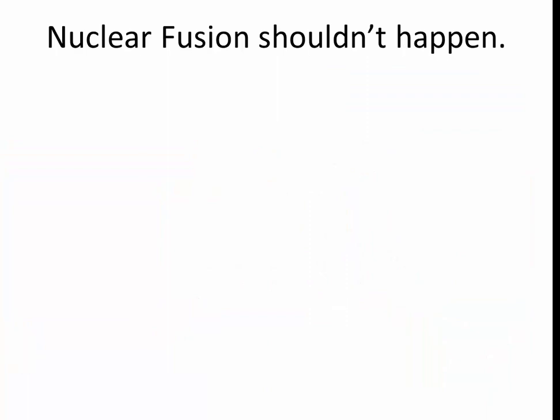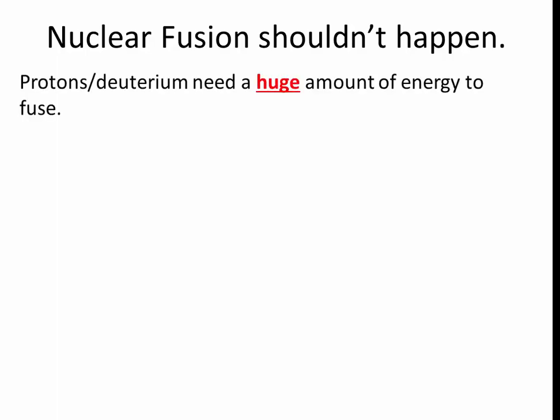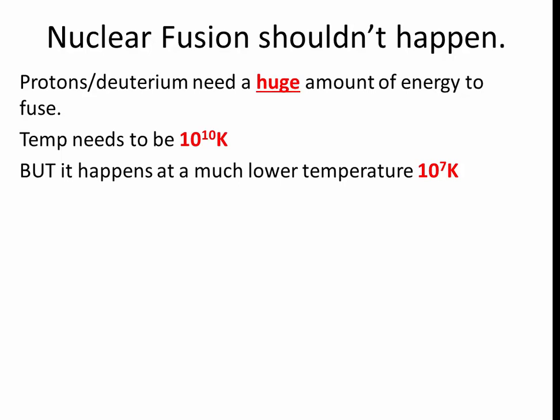Another example is that nuclear fusion in stars just shouldn't happen. The stars are not hot enough. Protons and deuterium need a massive amount of energy to be able to fuse. In fact, the temperature needs to be roughly 10 to the 10 Kelvin, which is 10,000 million degrees Kelvin, which is a bit hot. But we know that this happens in stars, which have a much lower temperature, 10 to the 7 Kelvin—a mere 10 million Kelvin. How can that happen?